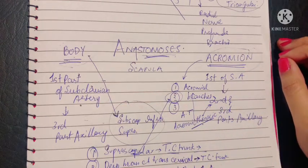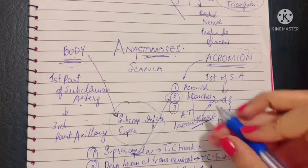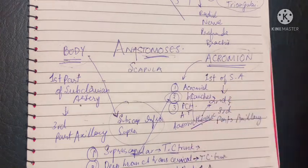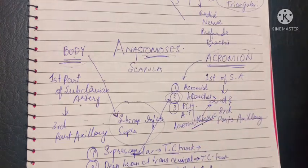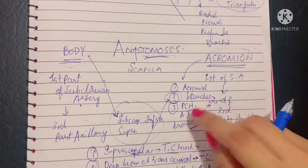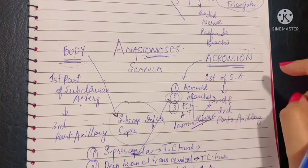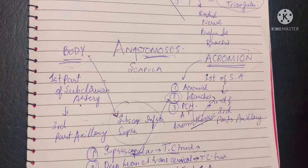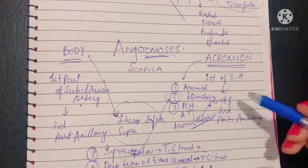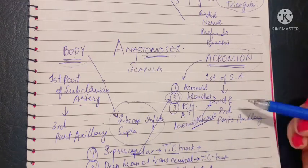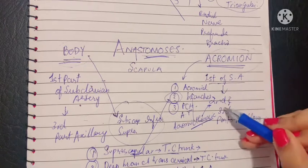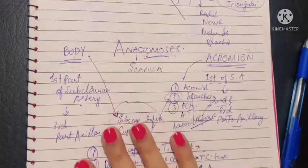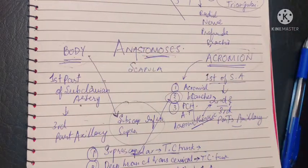Finally, we have the acromial branch of the posterior circumflex humeral artery (PCHA), which was a branch of the third part of the axillary artery. Hence it is proven that the first part of the subclavian artery is linked to the second and third parts of the axillary artery. This was all about the anastomosis around the scapula.